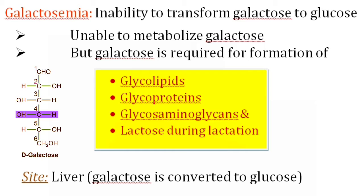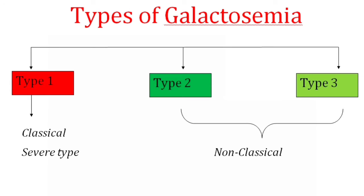Galactose is exclusively metabolized in the liver. Coming to types of galactosemia, there are three types. Type 1 is classical and it is a severe form of galactosemia. Type 2 and type 3 are non-classical and they are milder forms of galactosemia.